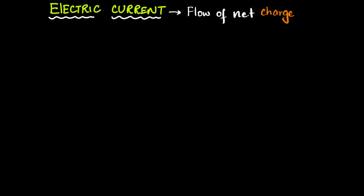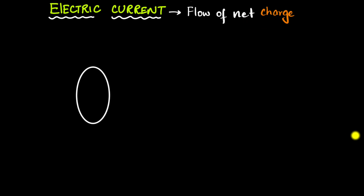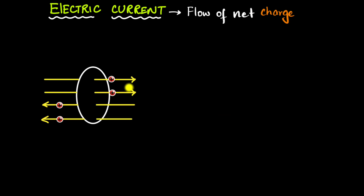So what exactly is electric current? Think of electric current as a flow of net charge through any given area. Imagine you have a tiny cross-sectional area through which you have equal amounts of positive charges flowing to the right and left in any given time. Notice there is a flow, but there is no net flow, and therefore we say there is zero current.